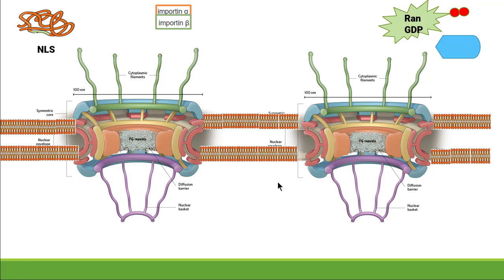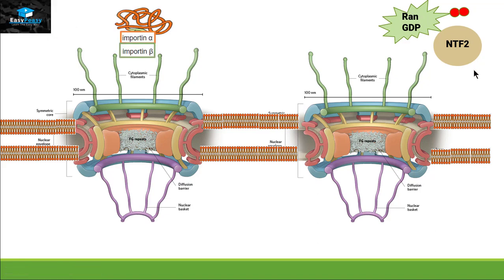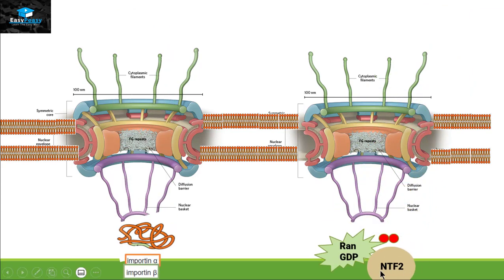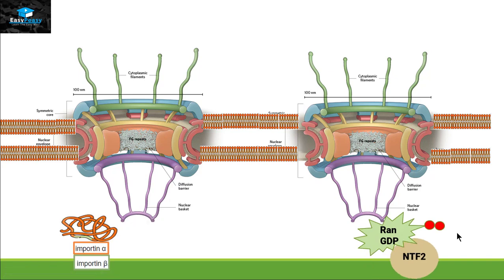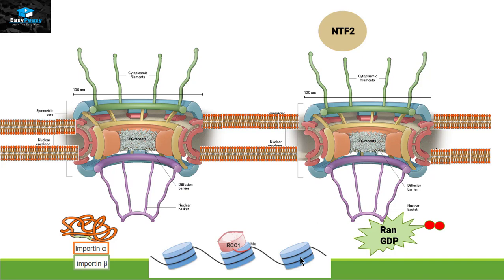RAN-GDP needs to get back inside the nucleus to perform its function. For that we have another protein called NTF2. Importin alpha and beta attach to the next cargo protein, while RAN-GDP attaches to NTF2, and they both enter inside the nucleus together. Inside the nucleus, the job of NTF2 is done, so it goes back out into the cytoplasm. Now the cargo protein needs to get detached from importin, but at this point we have RAN-GDP inside the nucleus instead of RAN-GTP. To convert RAN-GDP back to RAN-GTP, we need another protein that is attached to the chromatin material, called RCC1.